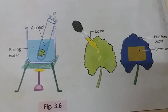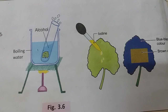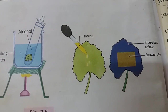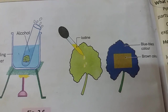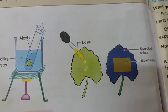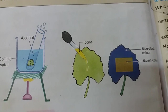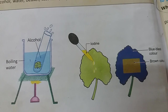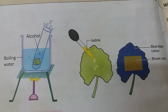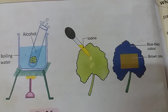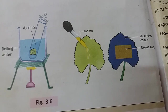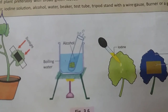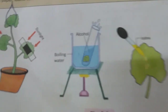Starch is formed only in those parts of the leaf where light can reach. Light is necessary for photosynthesis. Starch is formed during the process of photosynthesis. The remaining pale green part exposed to light turns into bluish black by adding iodine solution. This experiment proves that sunlight is necessary for photosynthesis.